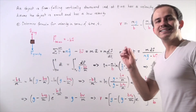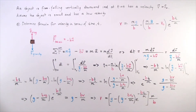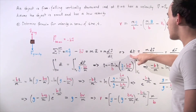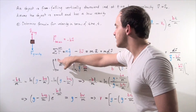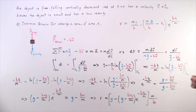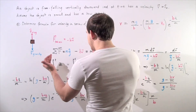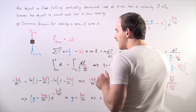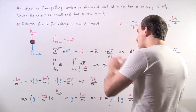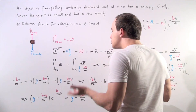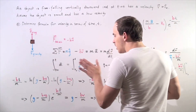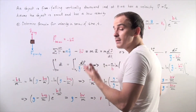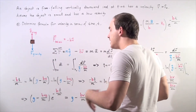Now we want to take the definite integral of both sides. We take the definite integral of the left side with respect to dt from t equals zero to t, and we take the definite integral from v naught to v of the right side. Whatever we do to the left side we must do exactly that to the right side. The left side simply becomes t after we evaluate it.